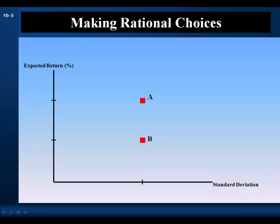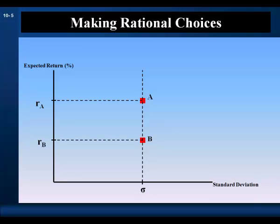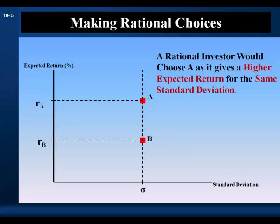This graph plots the expected return and standard deviation of two securities, A and B. Which security would a rational investor choose? Both securities have the same risk, but security A has the higher expected return. So a rational investor would choose A, as it gives the higher expected return for the same standard deviation.